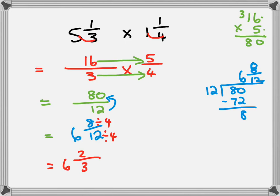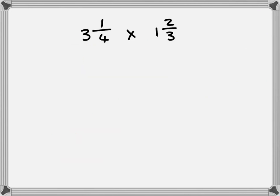Next one. Right, so we're going to first convert them into improper fractions. That's going to be 12, 13 over 4 times 3, 4, 5. 5 over 3.